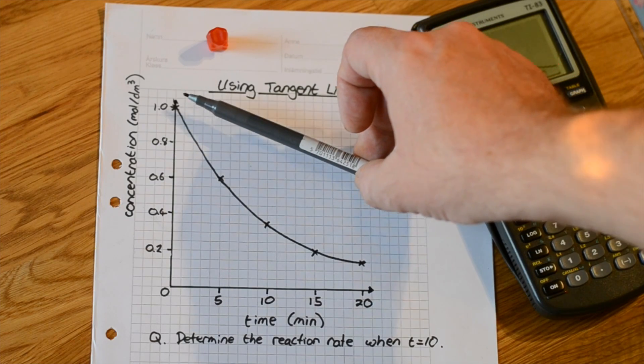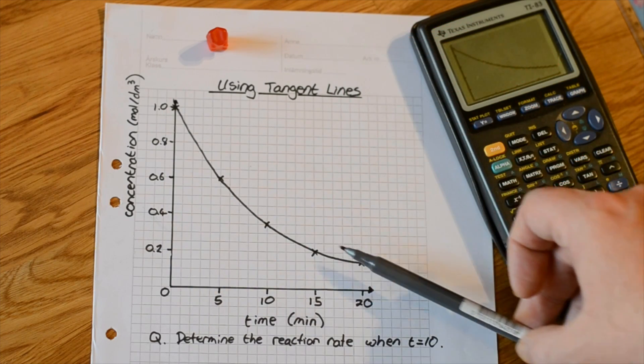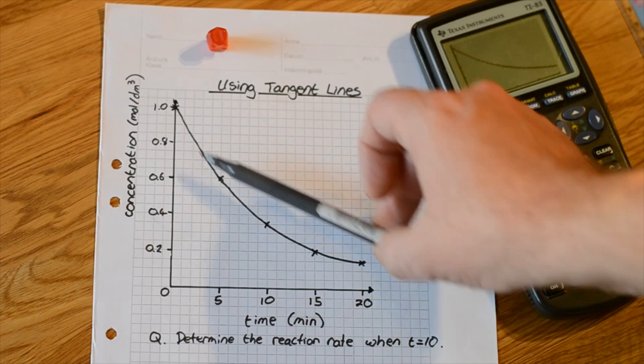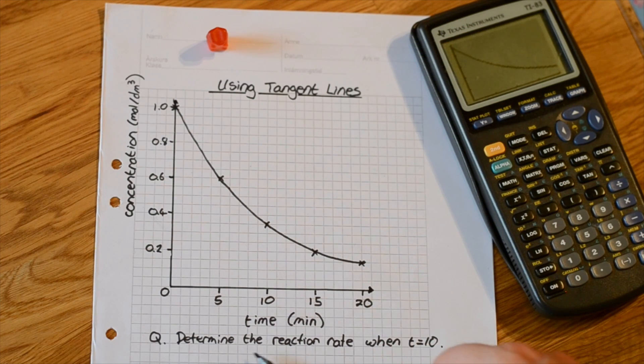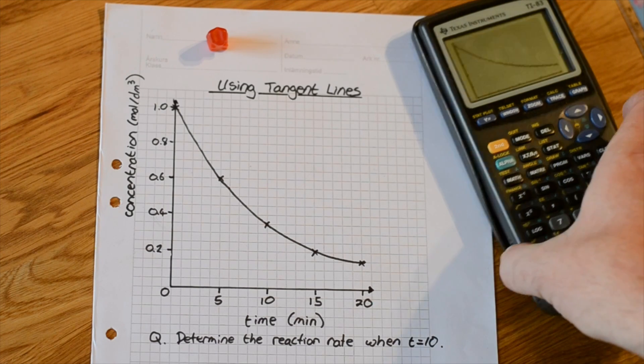We can see that the concentration is decreasing over time. The graph is falling. We're asked to determine the reaction rate when time is equal to 10 minutes. We're going to need to draw a tangent line to that.